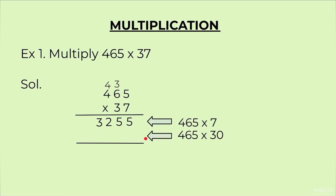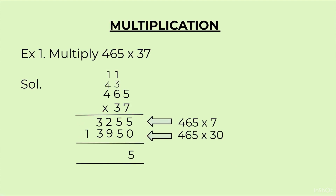For the next line of answer we multiply 465 by 30. Since 3 is at the tens place, we put one zero first. Then we multiply: 3 fives are 15, carry 1, write 5. Then 3 sixes are 18, plus 1 is 19, carry 1, write 9. Then 4 threes are 12, plus 1 is 13, write 13. Now we add the two numbers: 5+0=5, 5+5=10, 9+2=11+1=12, 3+3=6+1=7, and 1. Our answer is 17,205.